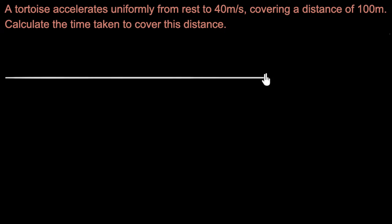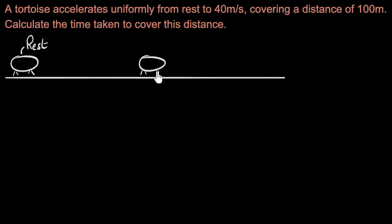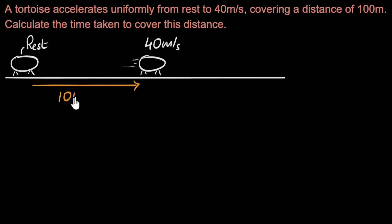Let's think about what's given to us and draw a diagram. Here is the road on which the tortoise is moving. It starts from rest, accelerates from rest to 40 meters per second. A little later, the tortoise is somewhere over here, and it accelerates all the way to 40 meters per second, covering a distance of 100 meters. We are asked to calculate the time taken, so we need to find what T is — how long it took the tortoise to go from start to finish.